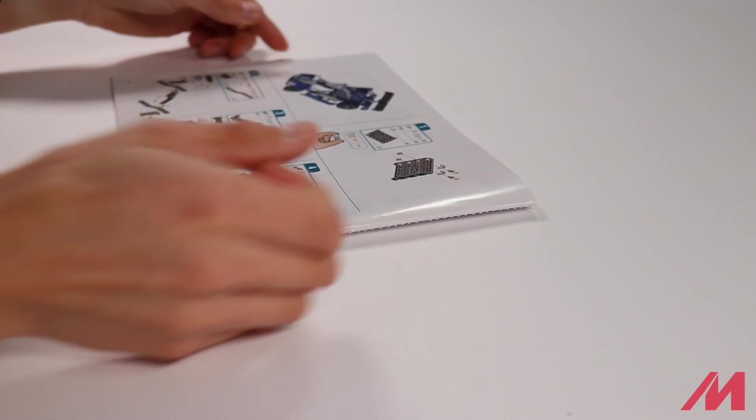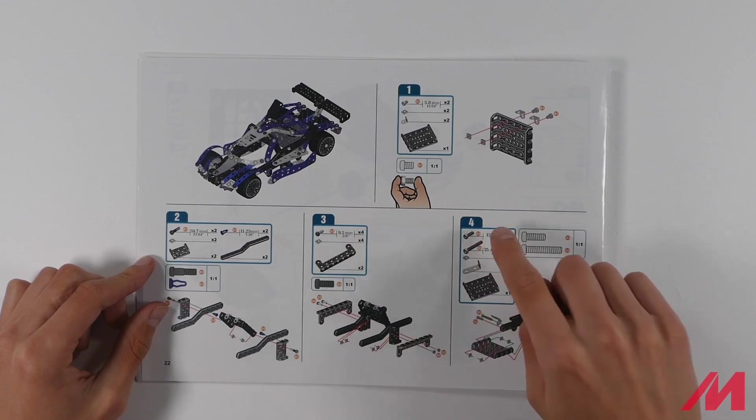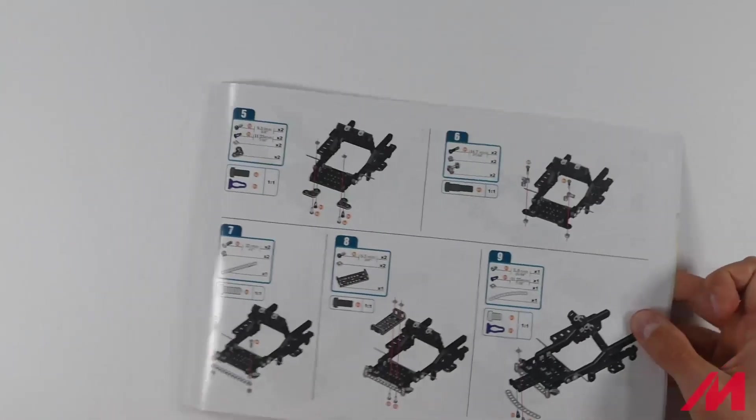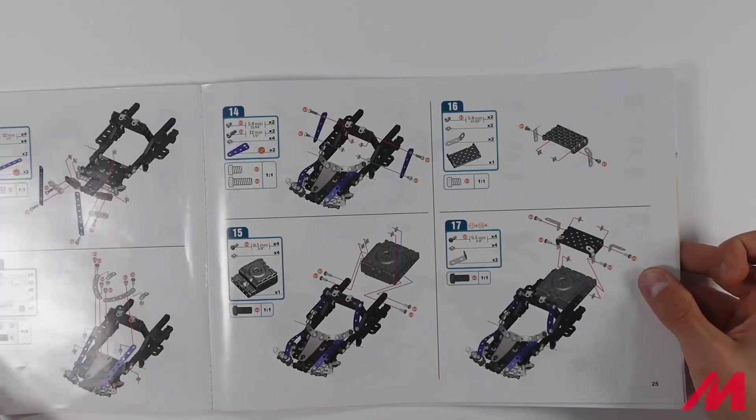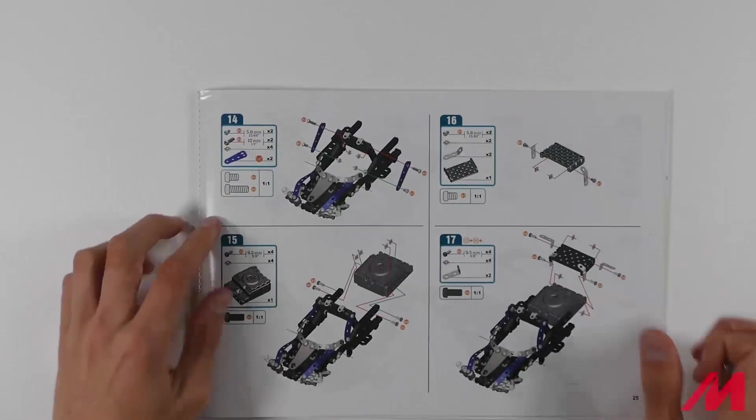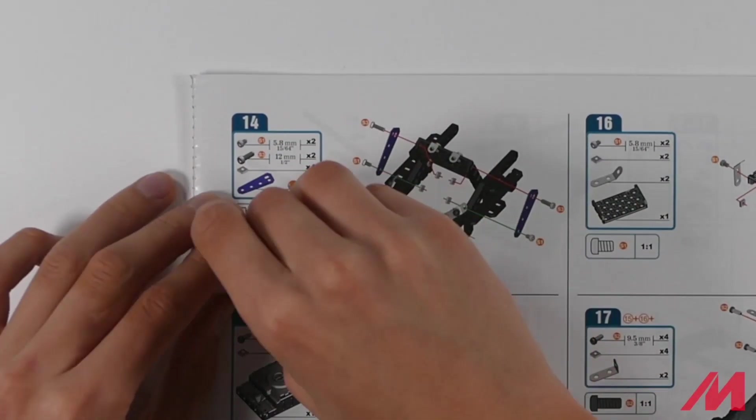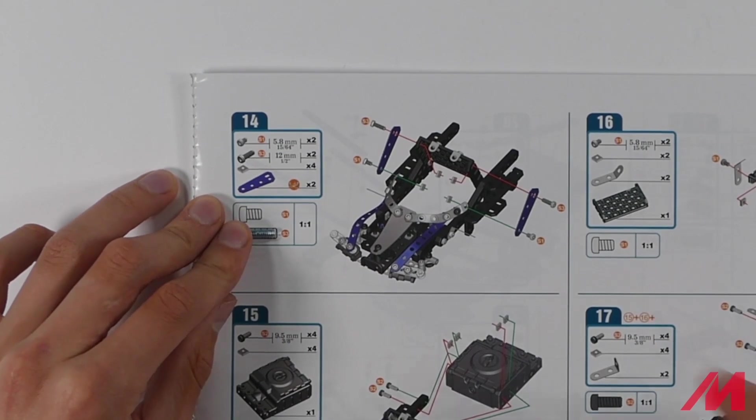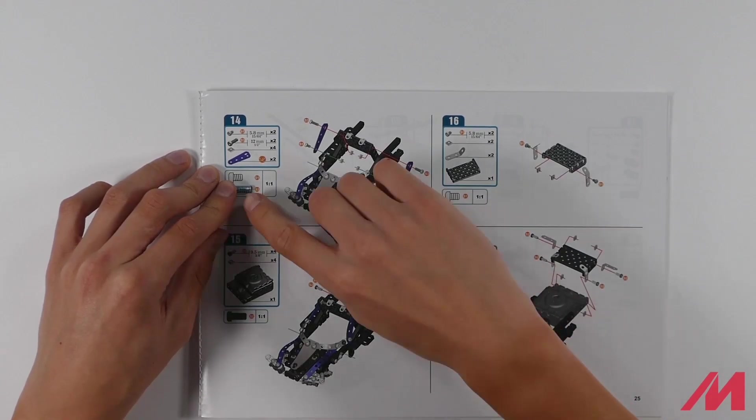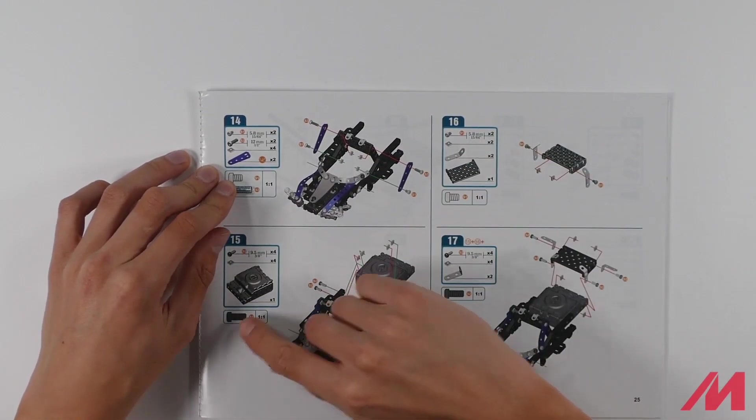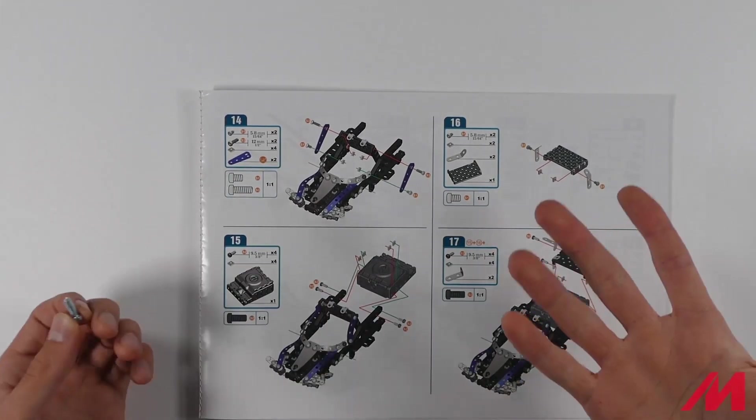The instruction manual is super great. Other than guiding you through the build step by step, it also shows you what piece sizes you need. Here, I need an S3, so I can match up the size of the S3 to the instruction manual. And I can do the same with every bolt on every build step. Helpful, right?